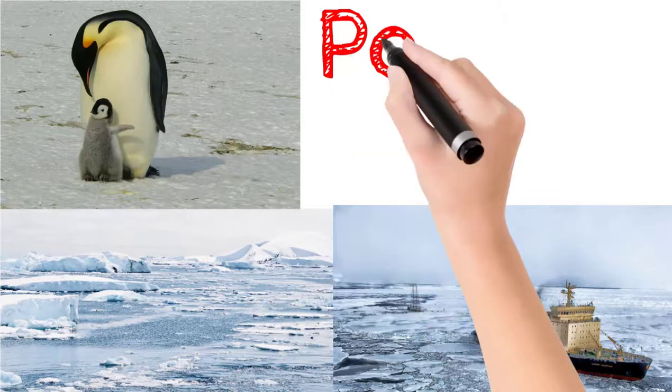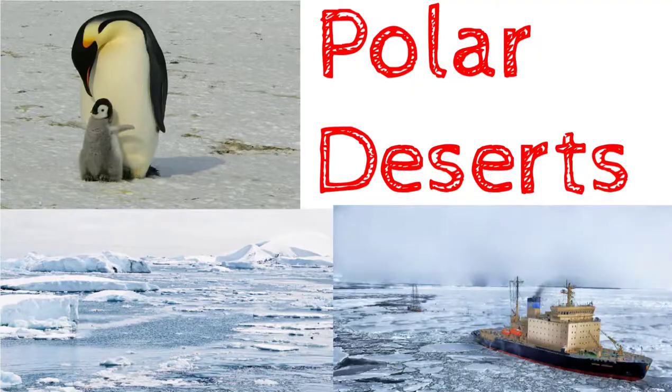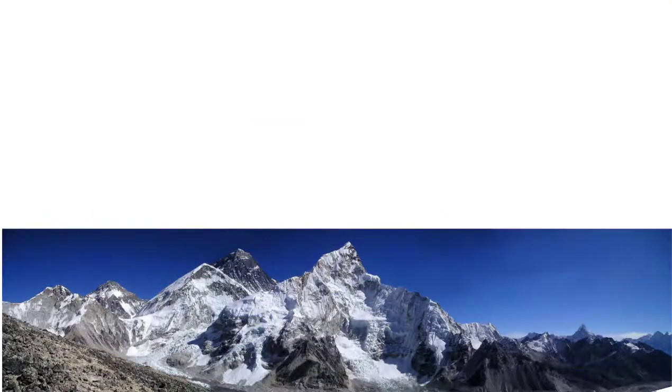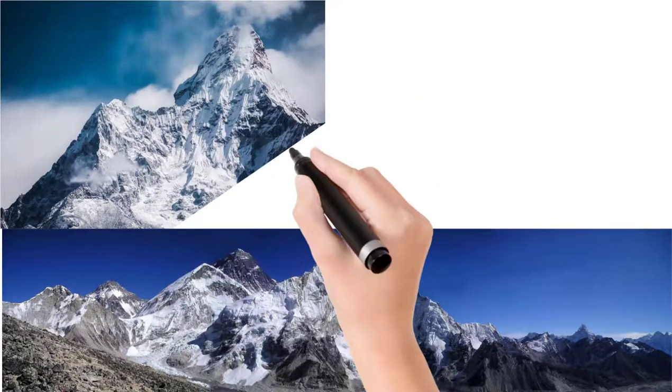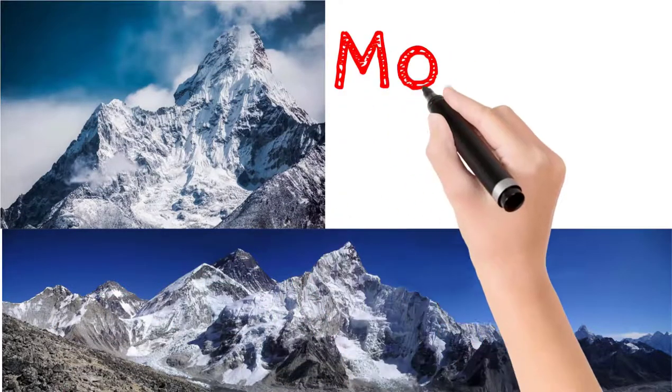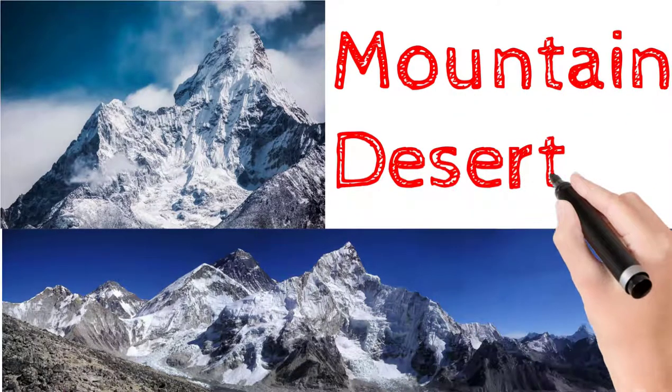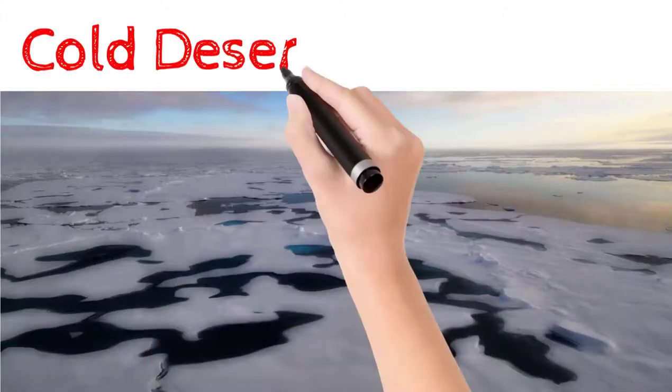The cold deserts are closer to the poles, which is why these deserts are also called polar deserts. There are cold deserts in many parts of the world. For example, highlands like the Himalayas can be called cold deserts, and deserts in the mountains are called mountain deserts. The largest desert in the world is Antarctica, as I have already mentioned.